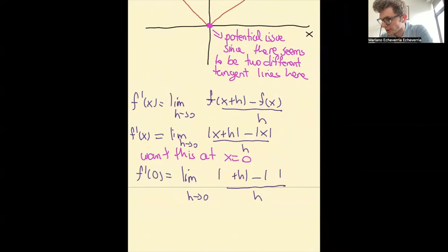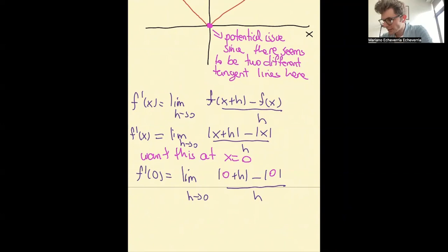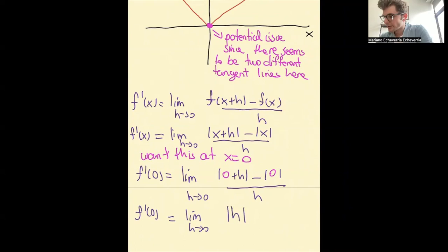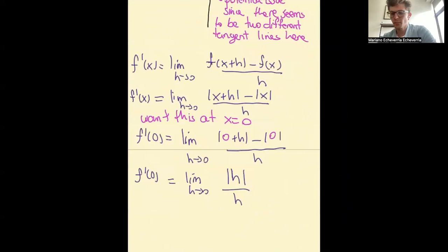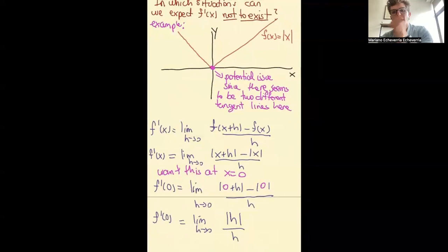Let me put that in different colors to make it clear. What happens here: you get that f prime of zero would be the limit as h approaches zero. The absolute value of zero plus h is just the absolute value of h. The absolute value of zero is just zero, so you don't even have to put it. So you just get the absolute value of h divided by h. Hopefully this looks like a familiar limit we have done before. Anyone remember why this limit does not exist?